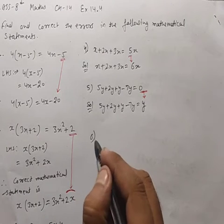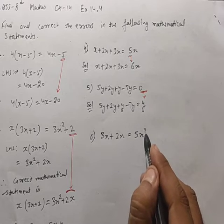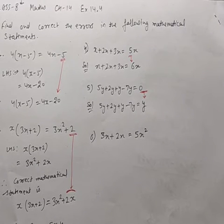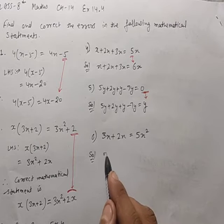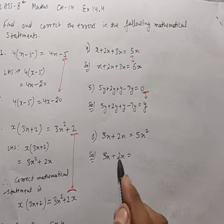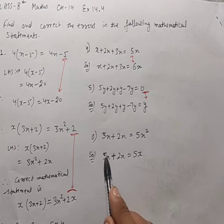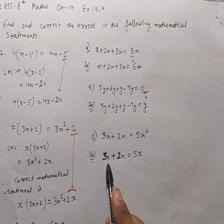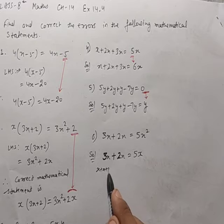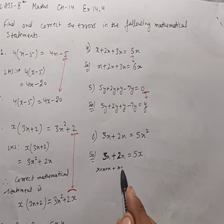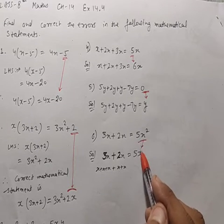Question 6: 3x+2x = 5x² is given. This is wrong — both are like terms, so they can simply be added. 3x+2x = 5x. The variables do not get squared when adding; 3x means 3 times x, and 2x means 2 times x, so total is 5 times x = 5x. The correction is: replace x² with x.